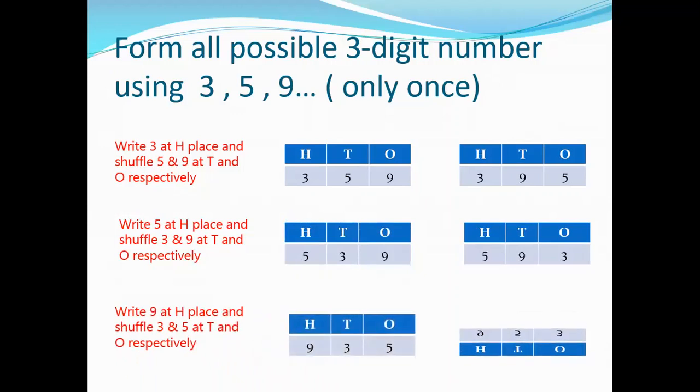And when we write 5 at hundreds place and shuffle 3 and 9 at tens and ones, it becomes 539, 593. And then we are doing 9 at hundreds place and shuffle 3 and 5, then it becomes 935 and 953.